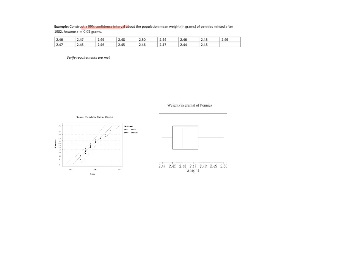So remember when we see confidence interval we are going to panic. So p stands for parameter. It helps organize our thoughts. So we're looking for the population mean weight of pennies minted after 1982.